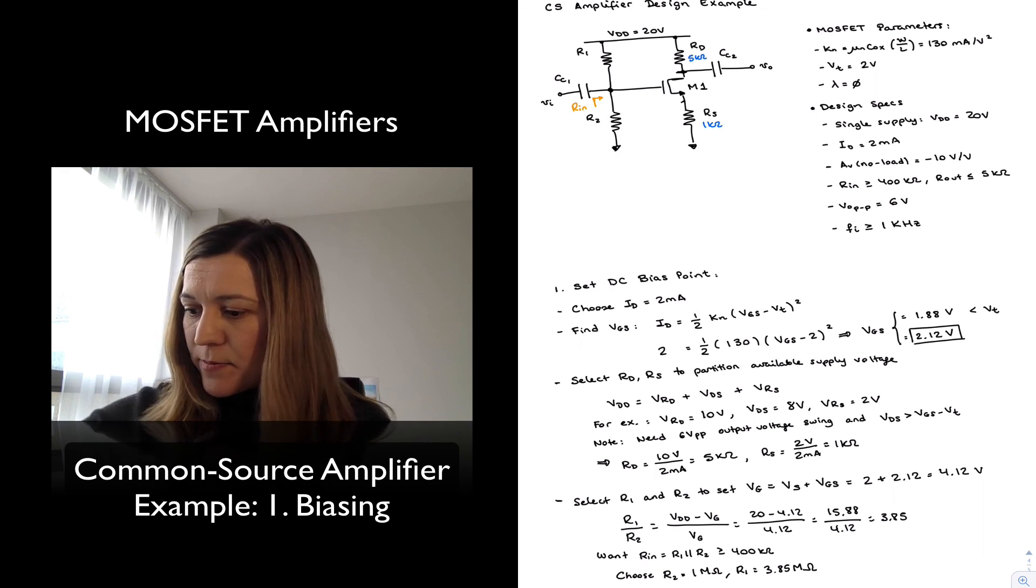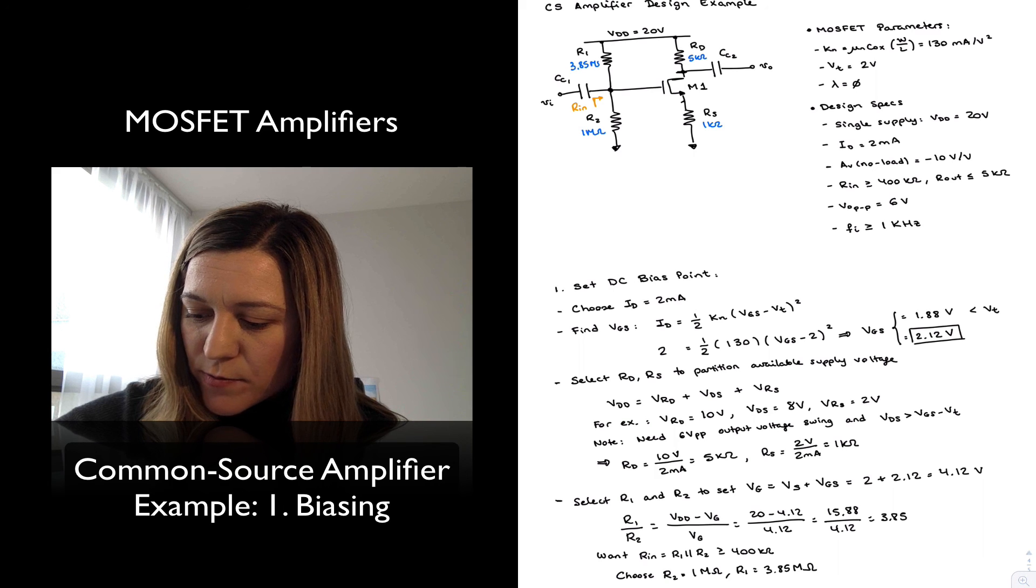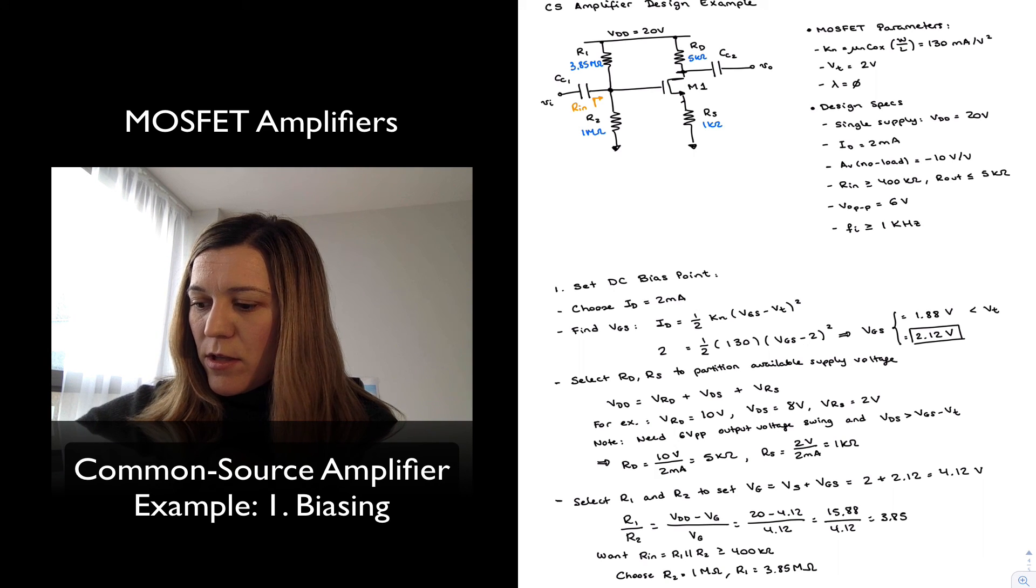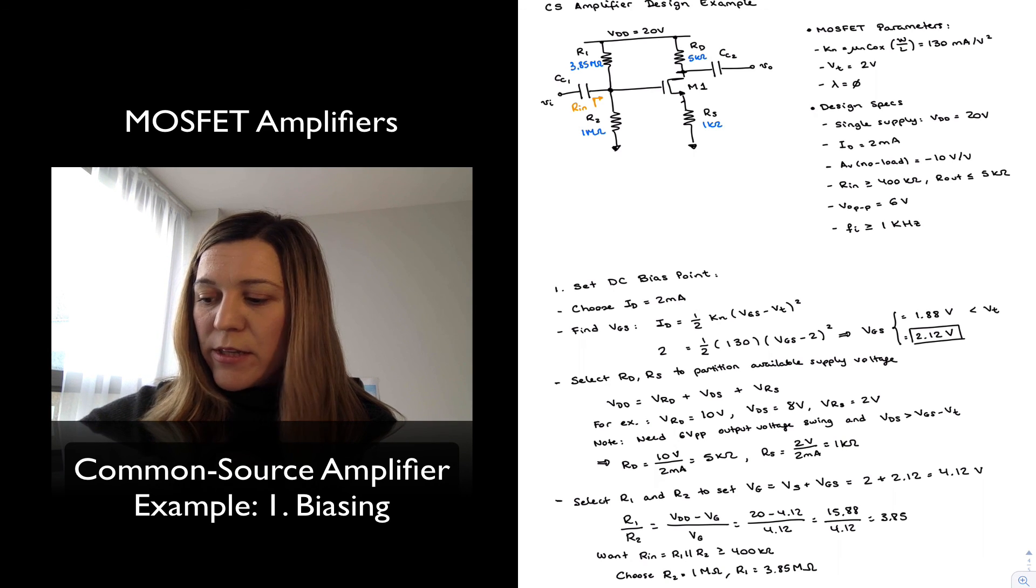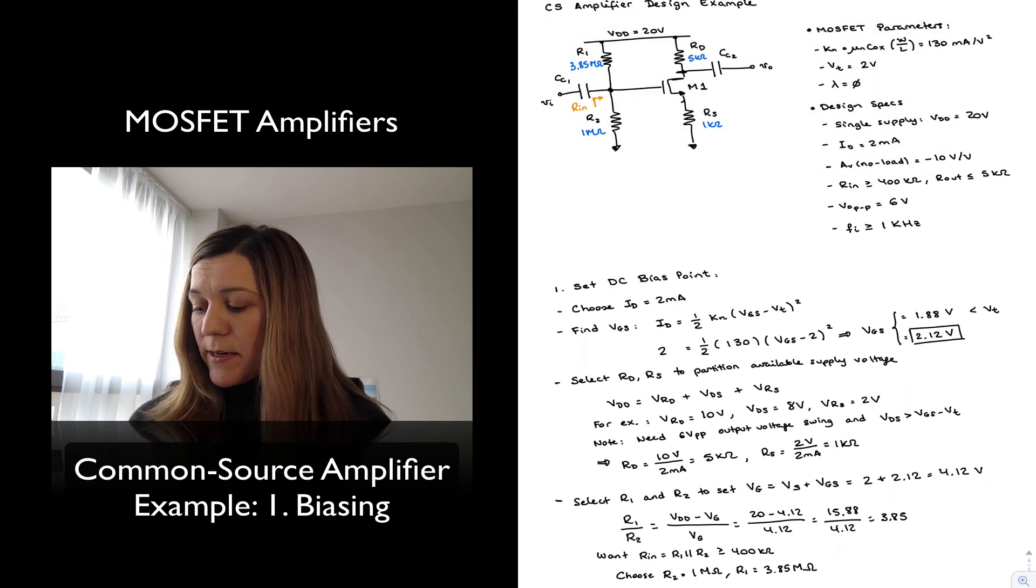So that's it. R2 will be 1 mega-ohm, R1 will be 3.85 mega-ohms. And we have completed the DC biasing portion of our circuit.